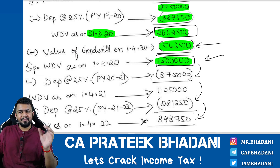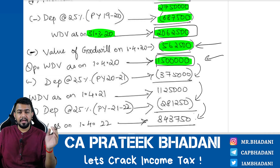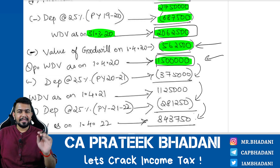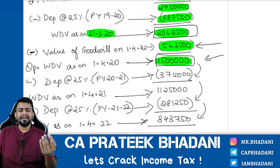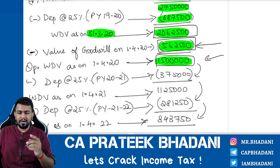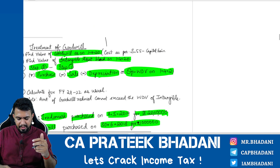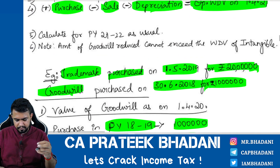Earlier, goodwill was part of the depreciable asset block, so capital gains on goodwill were calculated under Section 50. Now, since goodwill is not a depreciable asset, it is still a capital asset but not a depreciable capital asset. The cost of goodwill for capital gains purposes is ₹5,62,500 — the amount you reduced from the intangible asset block. Under Section 55, this becomes the cost of acquisition of goodwill for capital gain calculation.